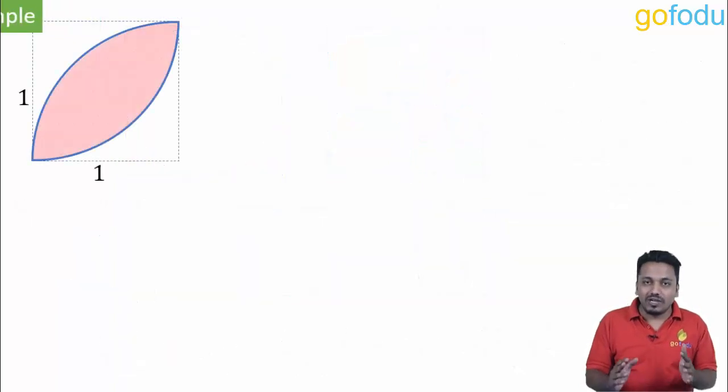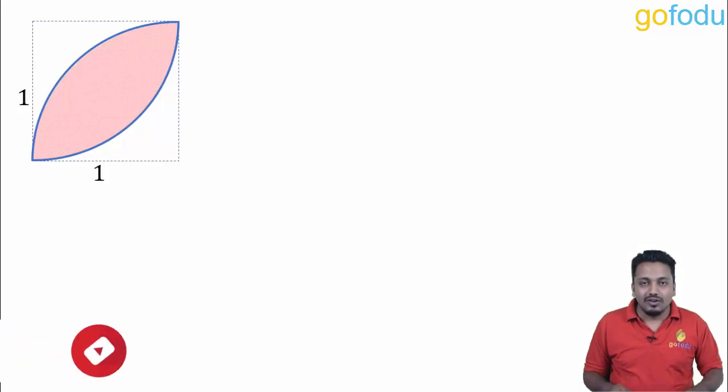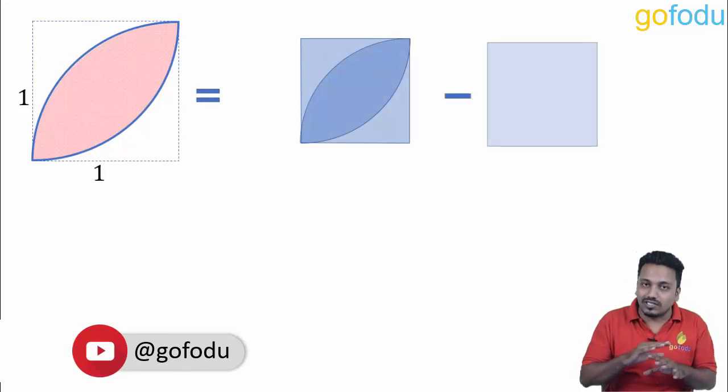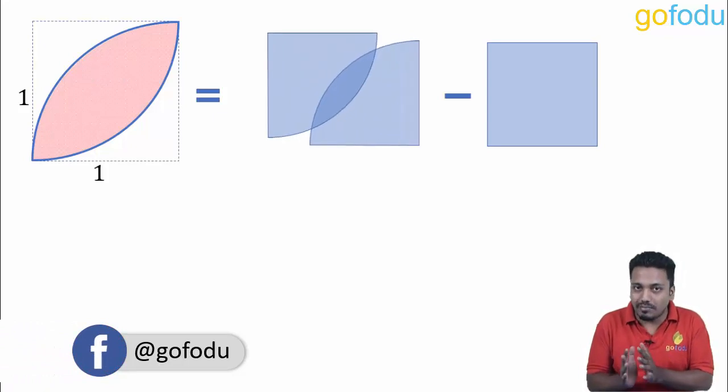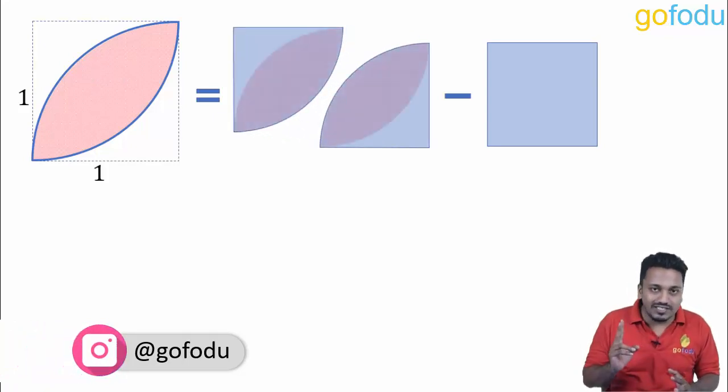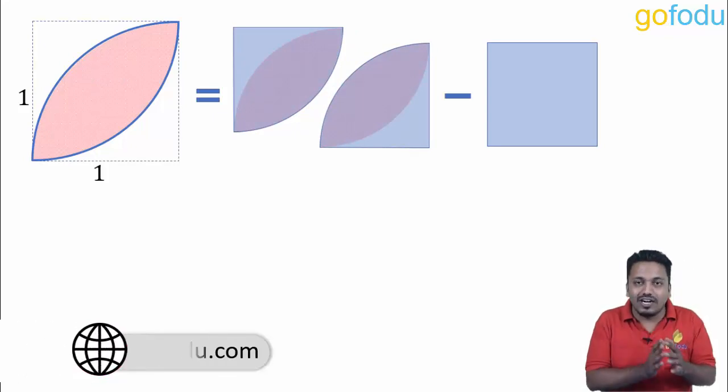Next we have a question from CAT 2005. Find the area of this leaf-like figure inscribed in a square of unit side. This figure can be considered as two overlapping quarter circles minus the square. Can you see the quarter circles overlapping? Basically this leaf area is coming twice. So on subtracting the square area, we will have the required area once.